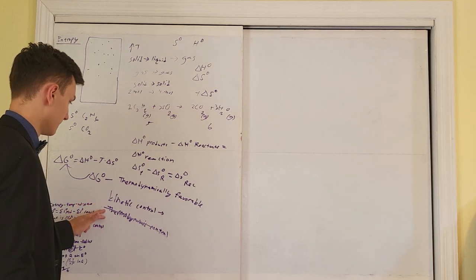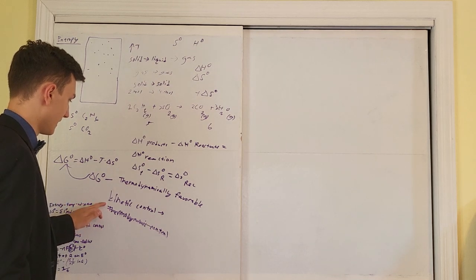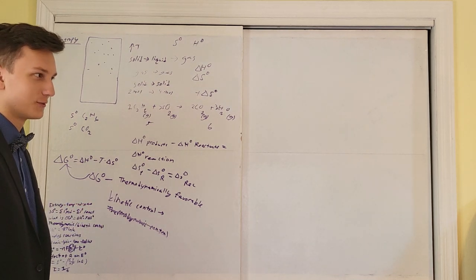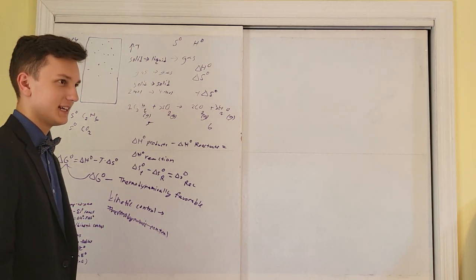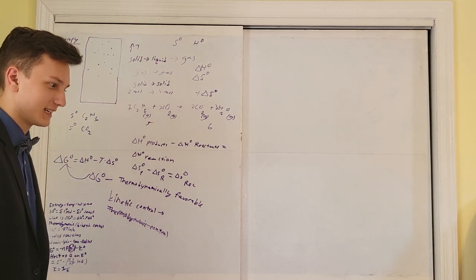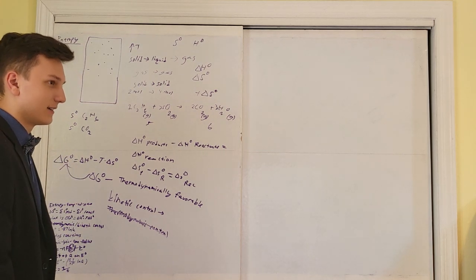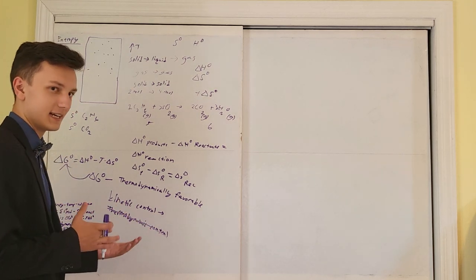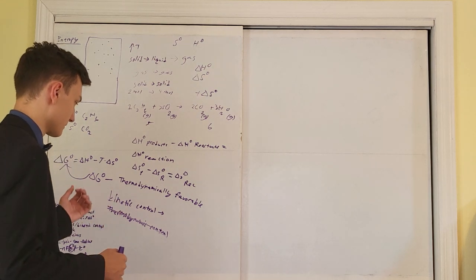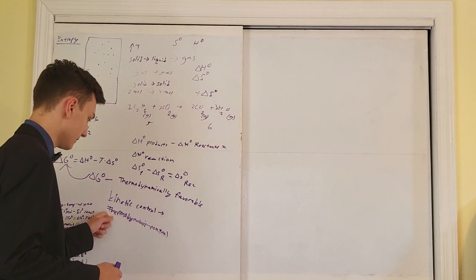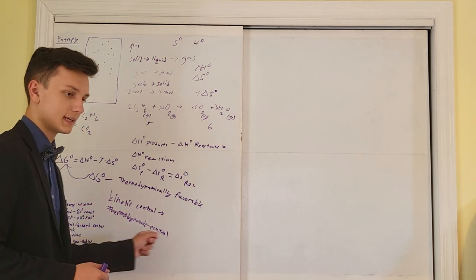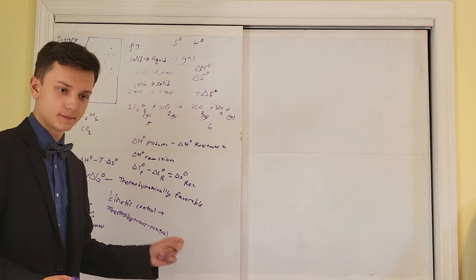If we come across a reaction that's supposed to be happening but it's not — we use the equation, delta G is negative, which means it's thermodynamically favorable. If it's thermodynamically favorable, it's not under thermodynamic control, so it must be under kinetic control. We must not have enough energy to surpass the activation energy barrier. Conversely, if heating a reaction to extreme temperatures produces nothing, that's thermodynamic control.